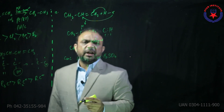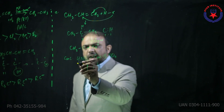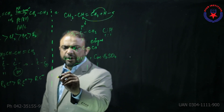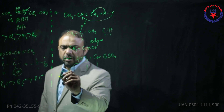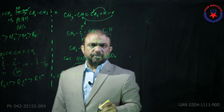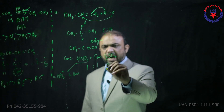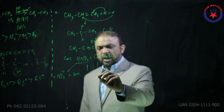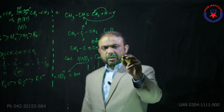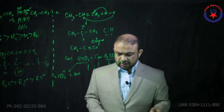Concentrated nitric acid and concentrated sulfuric acid are taken in a 1:1 ratio, and this is called the nitrating mixture. HNO3 performs two functions: number one, it is a nitronium ion producer; number two, it acts as a base and releases the OH group. Sulfuric acid also has two roles: it acts as an acid and as a catalyst. The temperature for nitration of benzene is 50 degrees Celsius.